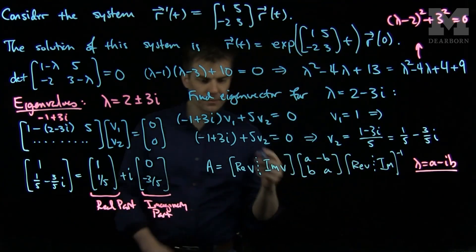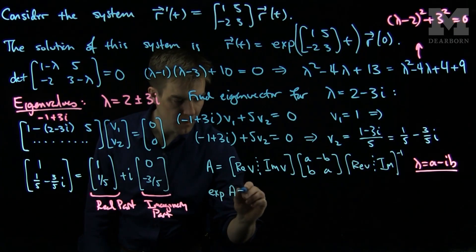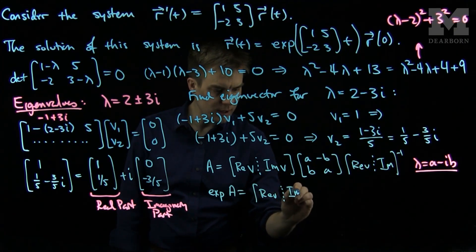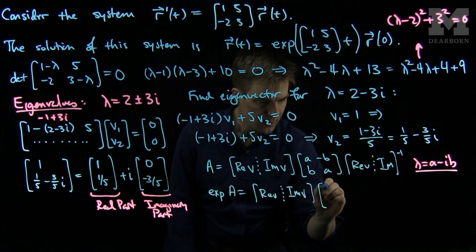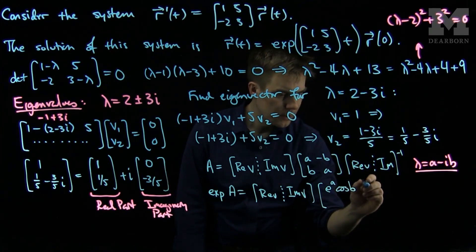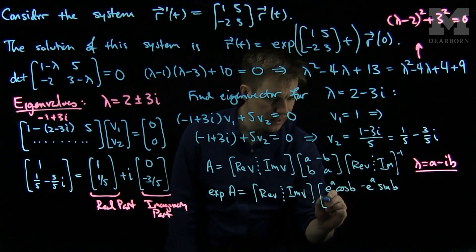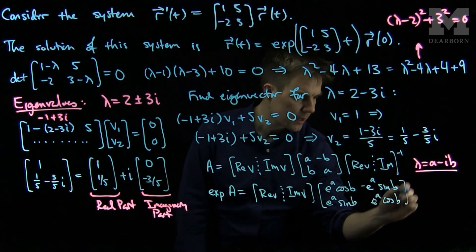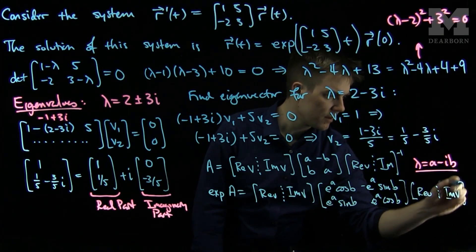Furthermore, when we exponentiate this, the exponential of A is [Re(V), Im(V)] times [[e^(at)cos(bt), -e^(at)sin(bt)], [e^(at)sin(bt), e^(at)cos(bt)]] times [Re(V), Im(V)]^(-1).